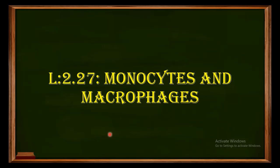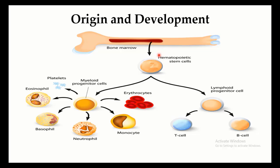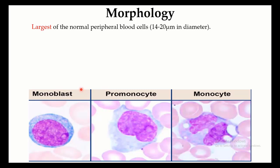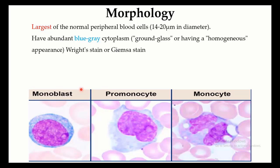Welcome back to part two on monocytes and macrophages. In the last video we discussed the origin and development of monocytes — how hematopoietic stem cells in the bone marrow gave rise to myeloid progenitor cells, which gave rise to monocytes and other granulocytes like neutrophils, basophils, and eosinophils. We also covered monocyte morphology: they are the largest peripheral blood cells with abundant blue-gray cytoplasm when stained with the Giemsa stain, and cytoplasmic vacuoles that appear as holes.